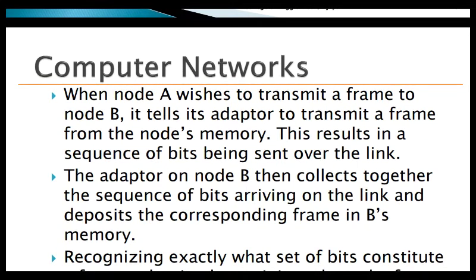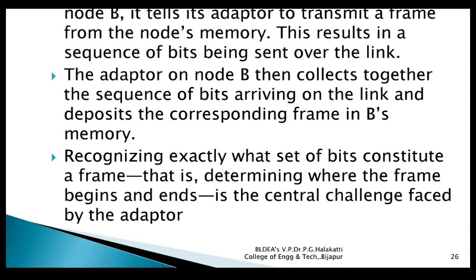You have node A and node B connected to the physical media. Node A has some information - a block of data - that it wants to transfer to node B. Node A creates the frame, and this frame is transmitted and sent to the adapter. The network adapter's responsibility is to transfer all the bits from the frame, convert them into signals, and propagate through the physical media. On the receiving side, the signaling component on node B receives these bit signals and converts them back into bits. The adapter on node B then collects all the sequence of bits arriving on the link and deposits the corresponding frame in B's memory.